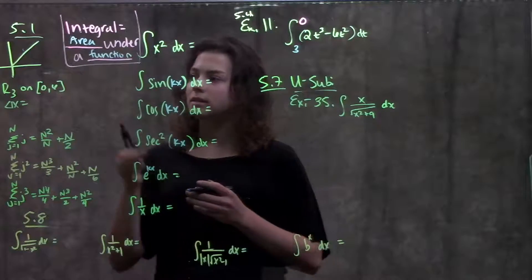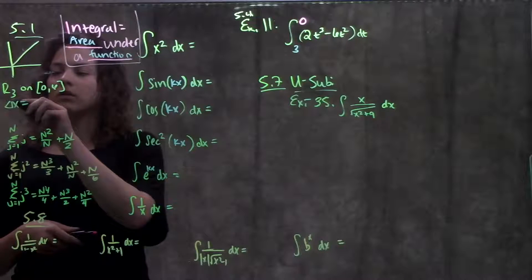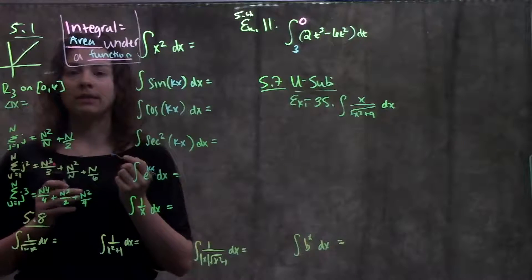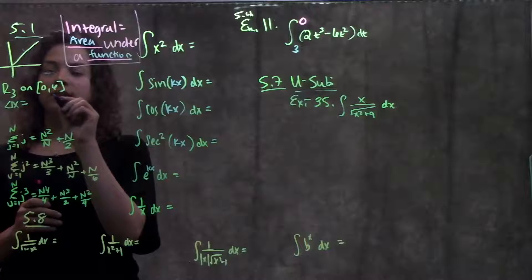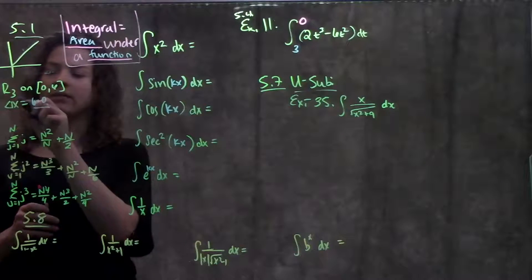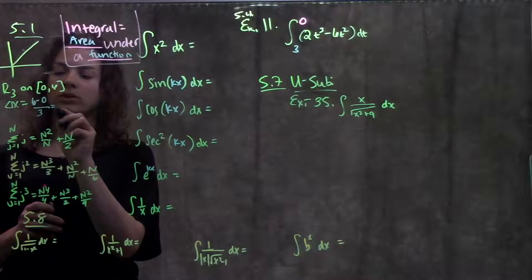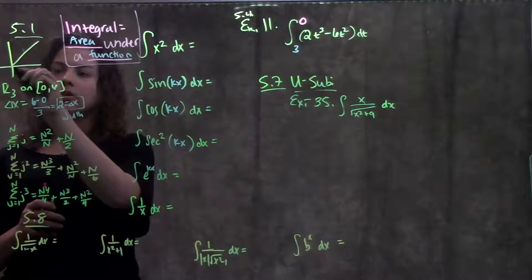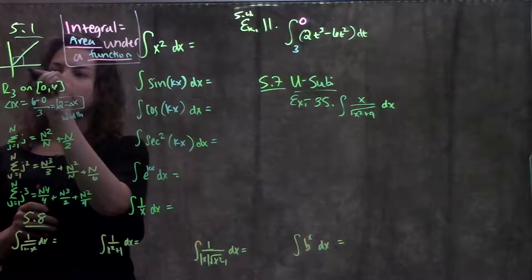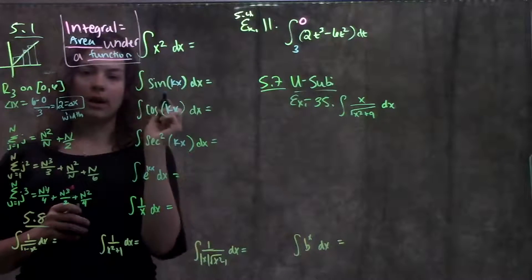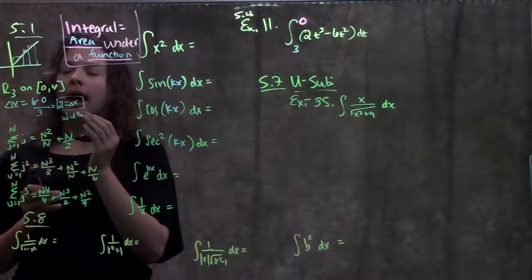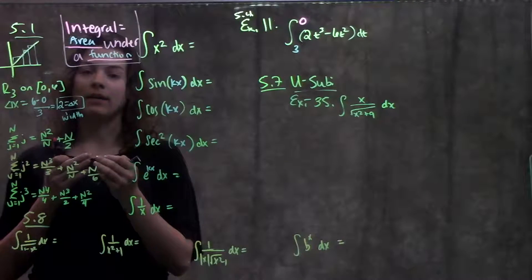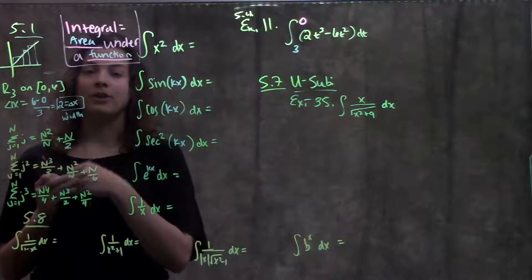For example, if I were given this function right here, and they wanted R3, meaning using our right endpoints and three rectangles on this interval from 0 to 6, first thing I would need to do is find my delta x, which is just the difference in my endpoints divided by the number of rectangles that they want, which would give me 2. So here's my delta x. This is the width of each rectangle that I'll draw. I'd go on my graph and move over 2 for however many rectangles they want. To find my area, I would then find what the height of each rectangle is, what my y value is, multiply that by the width, add them all together, and use that as my estimate for the area underneath this function.